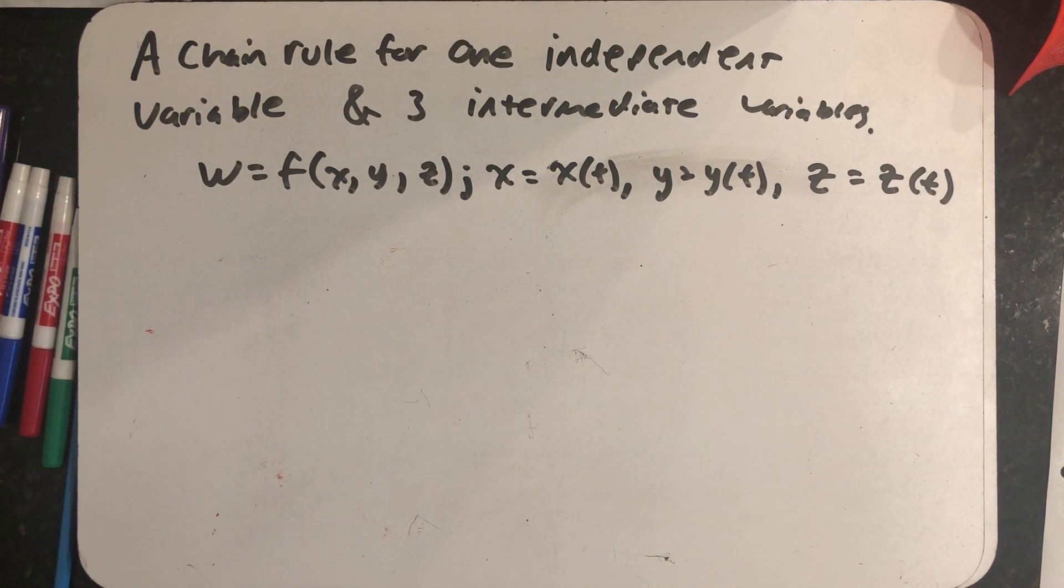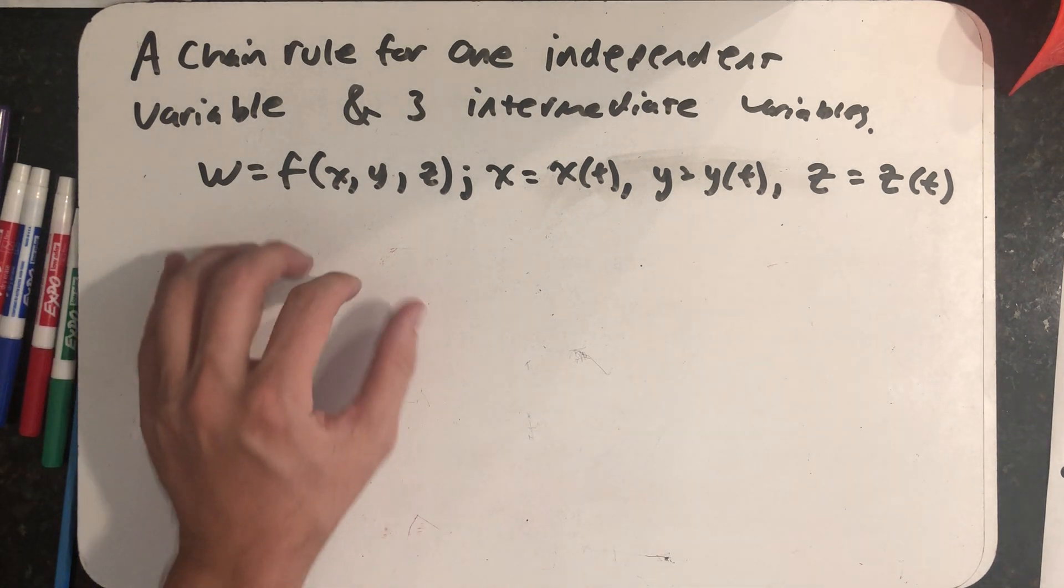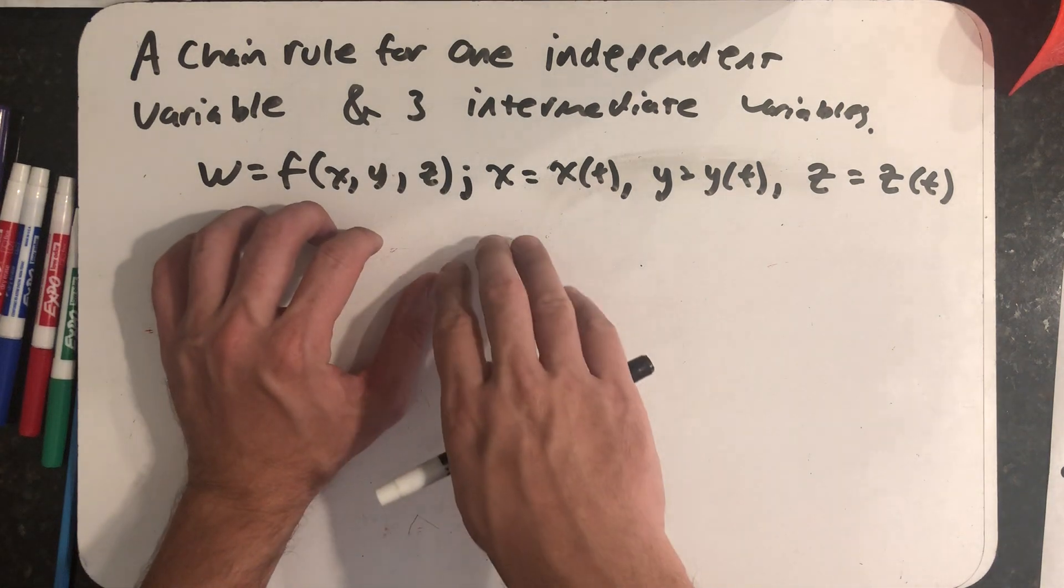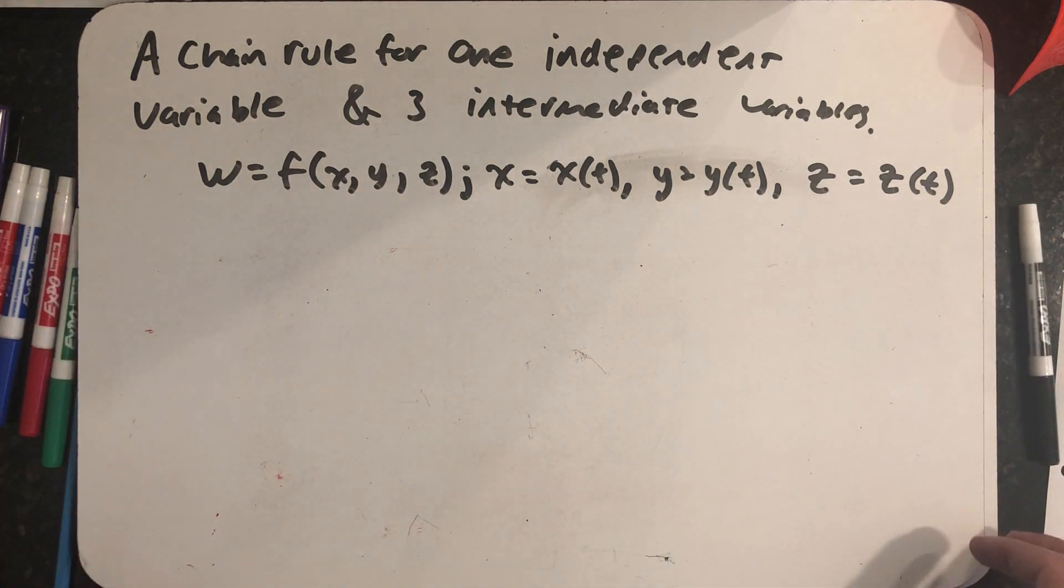I want to create a chain rule for one independent variable and three intermediate variables. So I have a function w equal to f of x, y, z, and then the functions x, y, and z are functions of t.